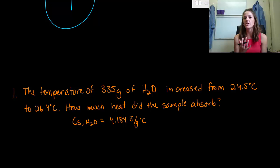But the first question here is a little bit complicated, so let's go through it slowly. The temperature of 335 grams of water increases from 24.5 degrees Celsius to 26.4 degrees Celsius. How much heat did the sample have to absorb? Given to you is the specific heat of water, which is 4.184 joules per gram degrees Celsius. So we're looking for a heat term. Go ahead and take this down or take a quick picture of this before we pause.